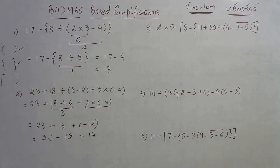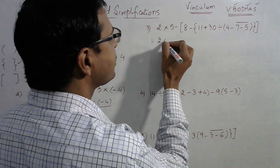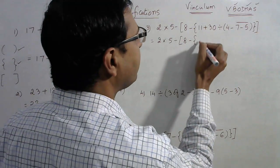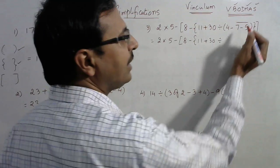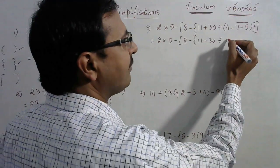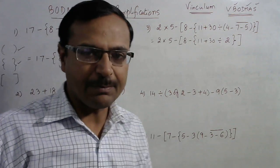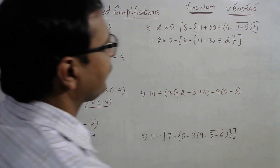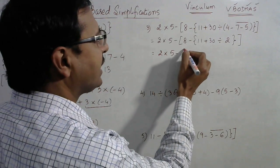That is the second question in this series of five. Now let us see the third one. Here we have the vinculum sign, so we take care of it first. Writing the entire question: 2 into 5 minus 8 minus curly bracket 11 plus 30 divided by — and now 7 minus 5 is done first to remove the vinculum: 7 minus 5 is 2, and 4 minus 2 is 2. We have a 2 after removing the vinculum and the parenthesis, reducing the problem. Now let us solve the curly brackets.